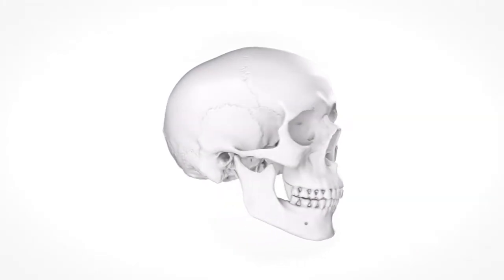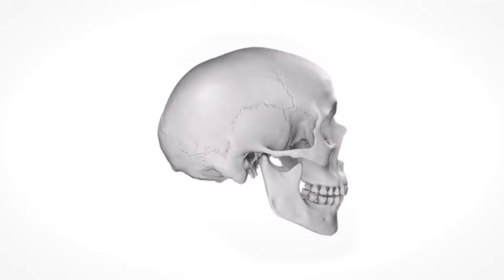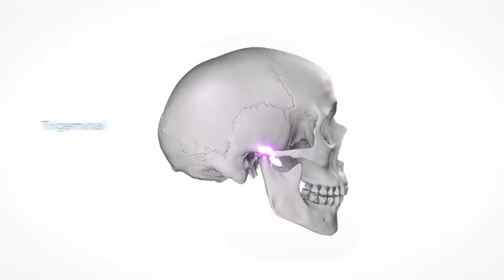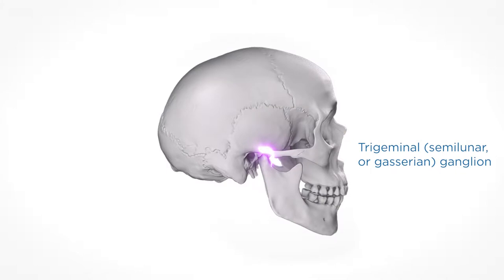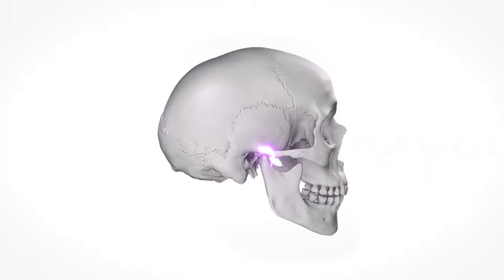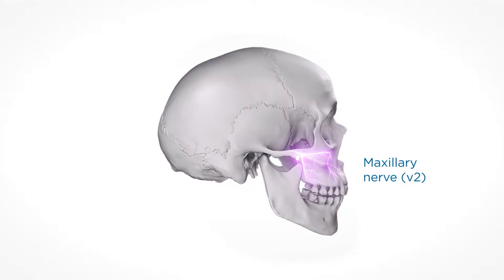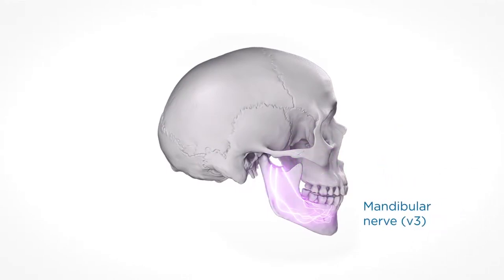The oral cavity receives innervation from the trigeminal or fifth cranial nerve. The sensory cell bodies of the nerve form a large half-moon shaped ganglion called the trigeminal, semilunar, or Gasserian ganglion, which is situated in the trigeminal depression of the middle cranial fossa. Originating from the trigeminal ganglion are three large nerve trunks: the ophthalmic V1, the maxillary V2, and the mandibular V3.